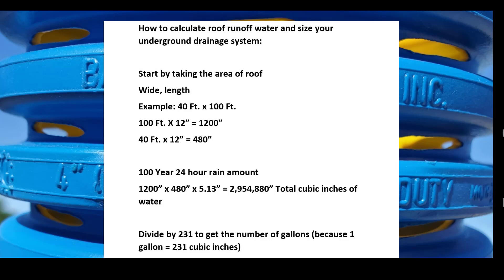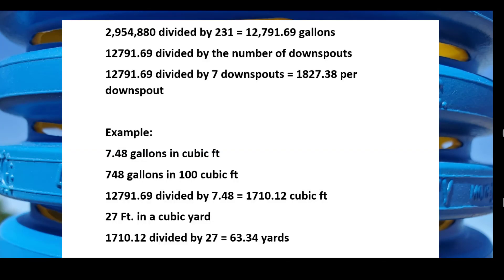Now you want to divide by 231 to get the number of gallons, because 1 gallon equals 231 cubic inches. So we have 2,954,880 cubic inches divided by 231 cubic inches, which equals 12,791.69 gallons.